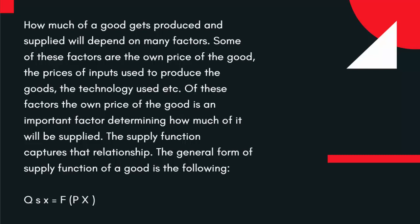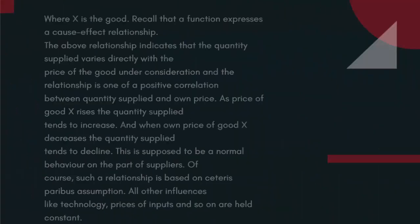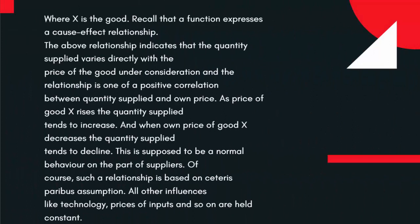The general form of the Supply Function of a good is the following: QSX equals F(PX), where X is the good. Recall that a function expresses a cause-effect relationship. The above relationship indicates that the quantity supplied varies directly with the price of the good under consideration, and the relationship is one of positive correlation between quantity supplied and own price.